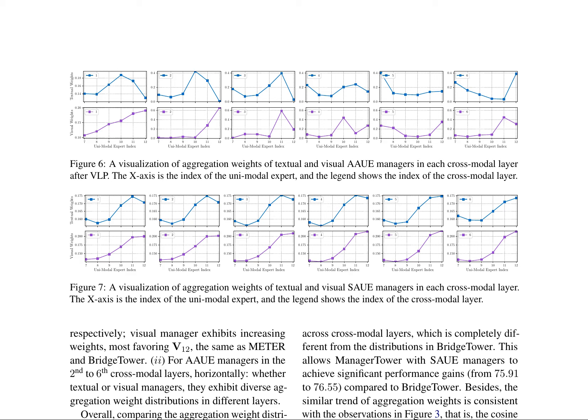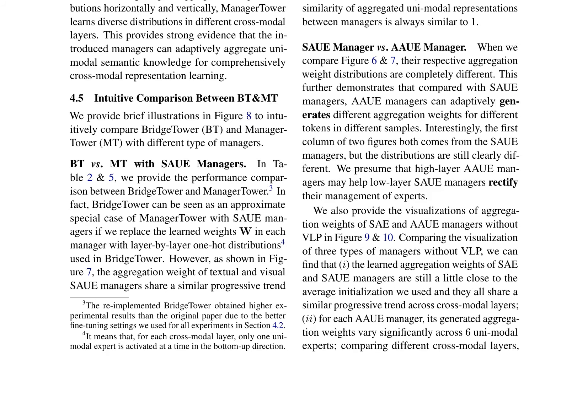The visualizations of aggregation weights of SAE and SAUE managers without VLP demonstrate that the learned aggregation weights are still close to the average initialization and share a similar progressive trend across cross-modal layers. In contrast, AAUE managers generate aggregation weights that vary significantly across six unimodal experts comparing different cross-modal layers. In conclusion, Manager Tower's novel architecture and adaptive aggregation mechanism significantly enhance the model's performance on various visual language tasks, as its ability to adaptively aggregate unimodal semantic knowledge facilitates comprehensive cross-modal alignment and fusion in each cross-modal layer.